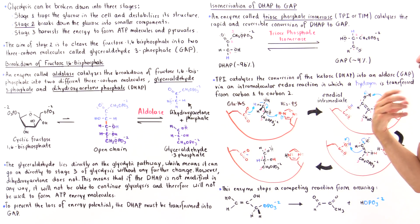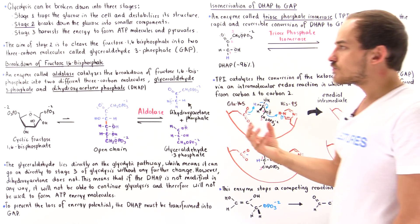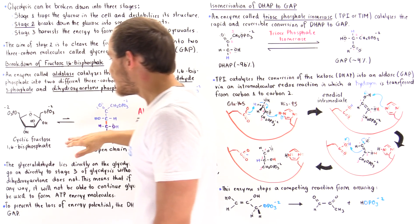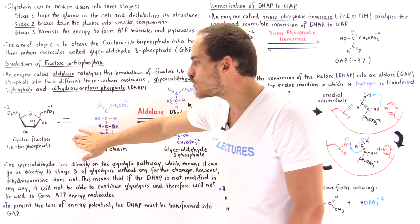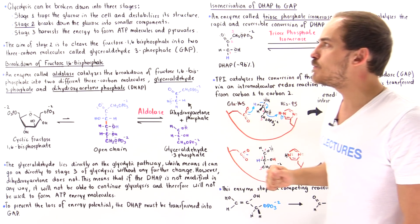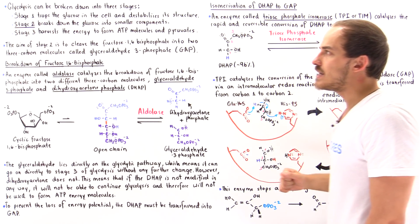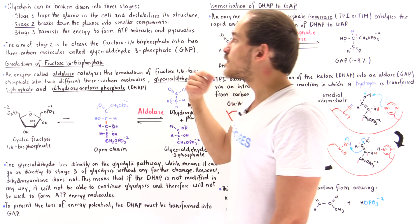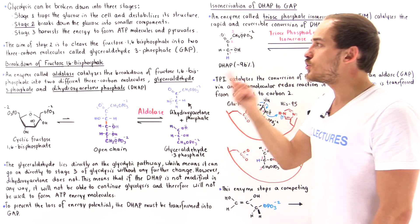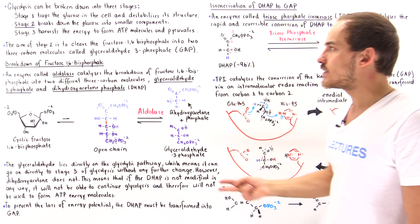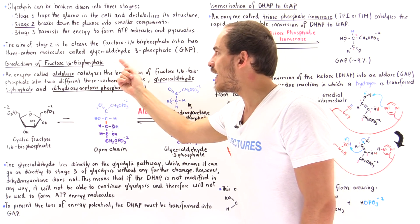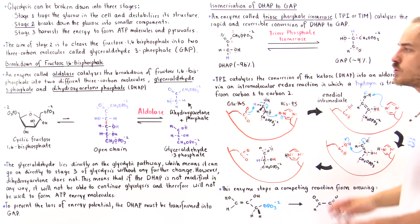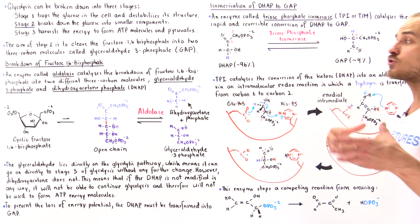To conclude, the point of stage two is to take fructose 1,6-bisphosphate formed in stage one and transform it into two identical glyceraldehyde 3-phosphate molecules.